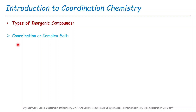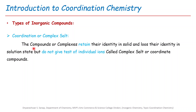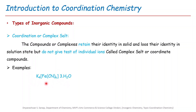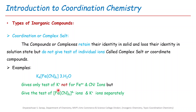The second type of inorganic compound is coordination or complex salt. The complex salt retains its identity in the solid state and loses it in solution, but does not give tests for individual ions — these are called complex salts or coordinate compounds. For example, K₄[Fe(CN)₆]·3H₂O: when dissolved in water, it gives a test only for K⁺ ion. It does not give individual tests for Fe and CN⁻ ions, but gives tests for K⁺ and [Fe(CN)₆]⁴⁻ ions.